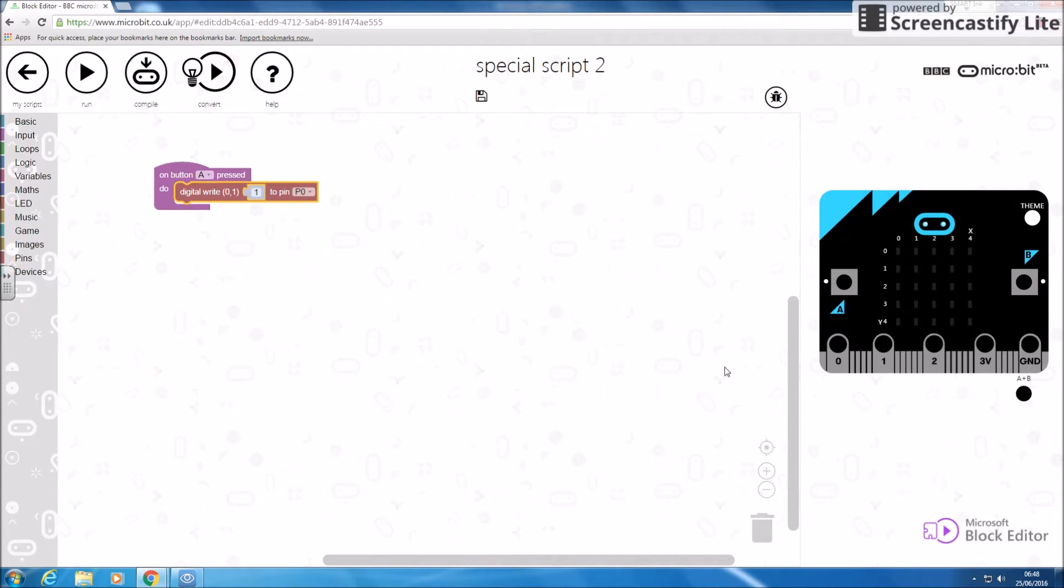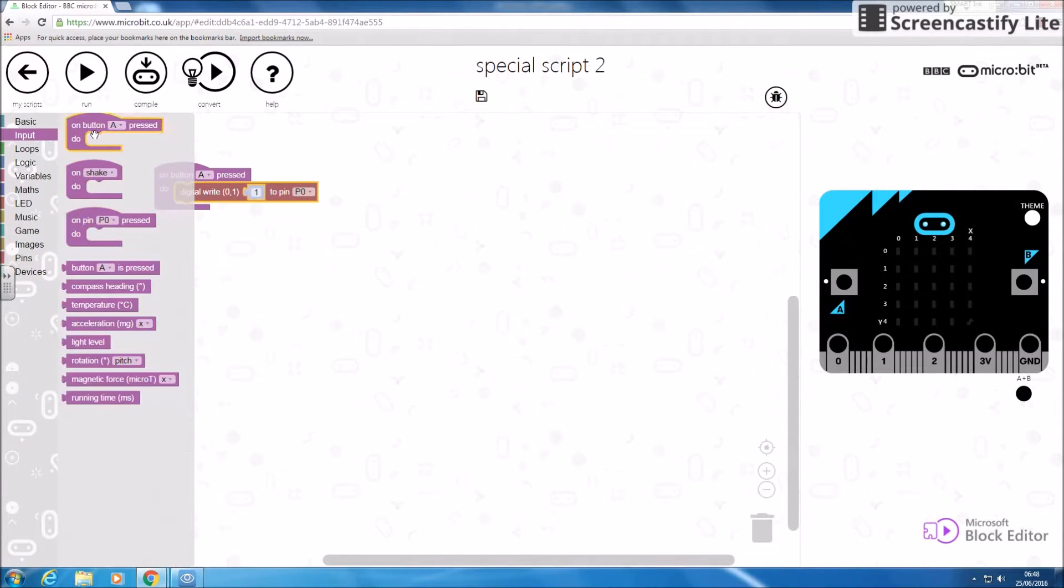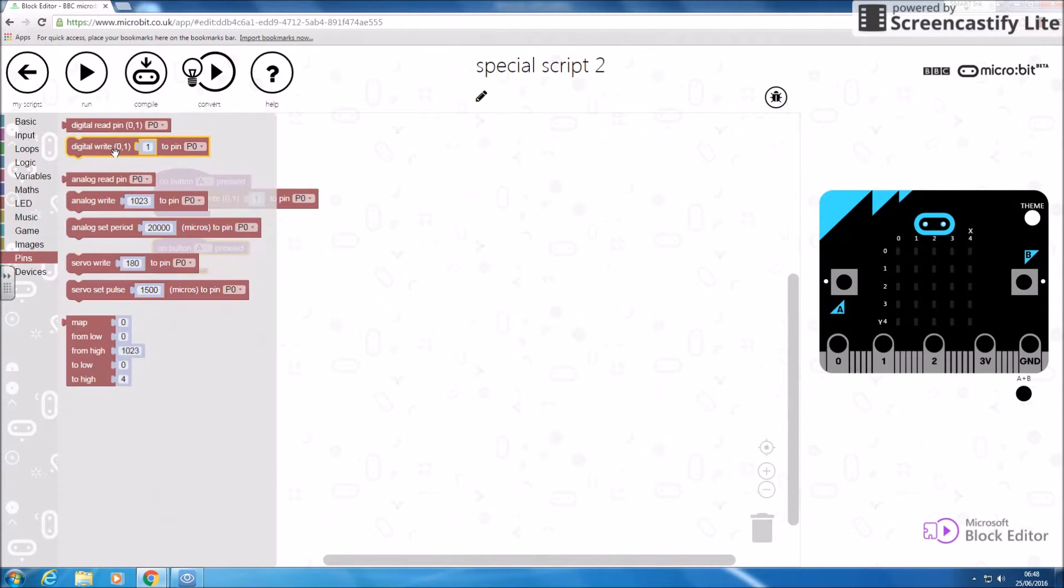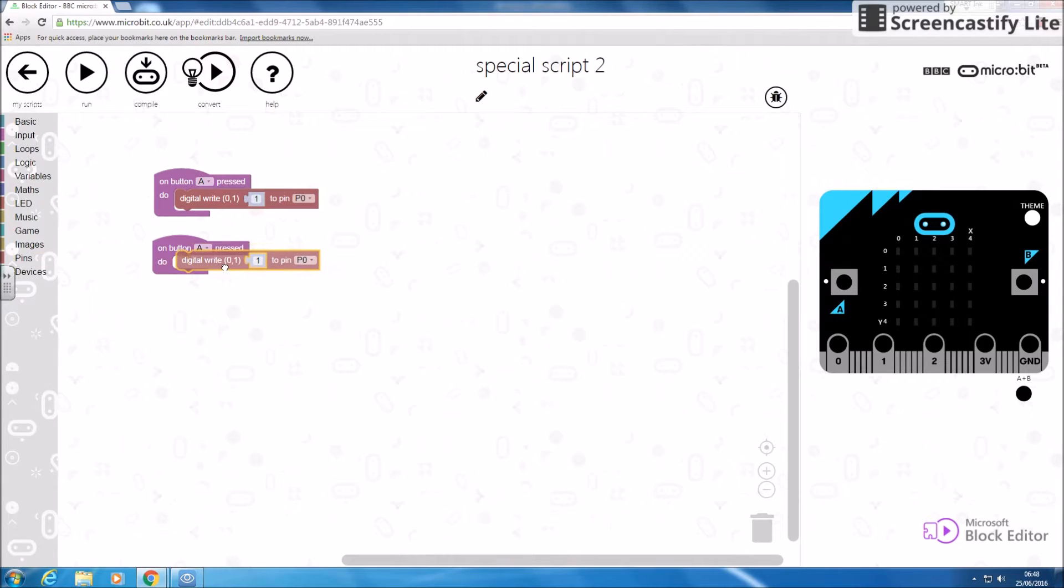Pin zero here is on. I'm then going to do the same thing again. I'm going to go pins write digital zero, I'm going to change it to zero, that turns it off. And I want to change it to the B button as well. So at the moment that's a really simple program that turns the pin on with the A button and then the pin off with the B button.